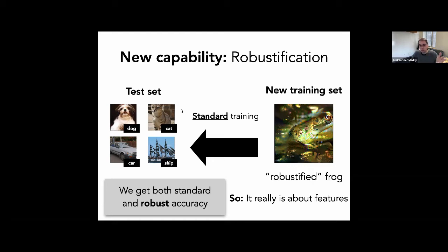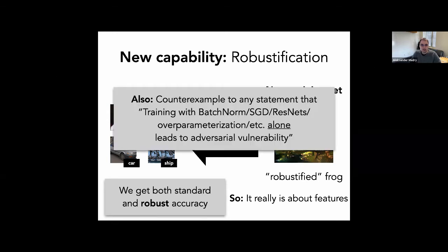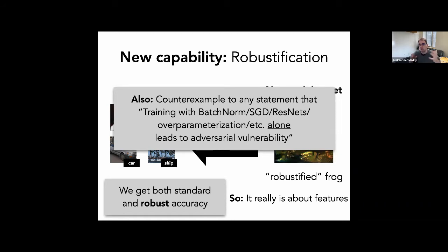This robustified dataset also shows that no particular training technique — batch norm, ResNets, over-parameterization — is solely responsible for vulnerability. On a robustified dataset, whatever training method you use, you get a robust model. So it really is about features, not models. Training technique does impact robustness — that is why adversarial training works — but it is not the only reason vulnerability exists.